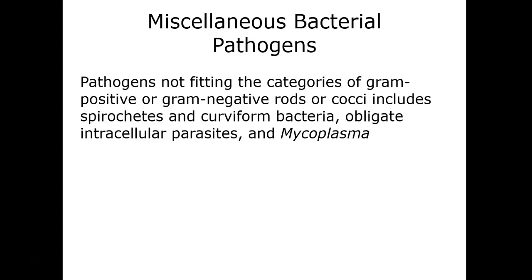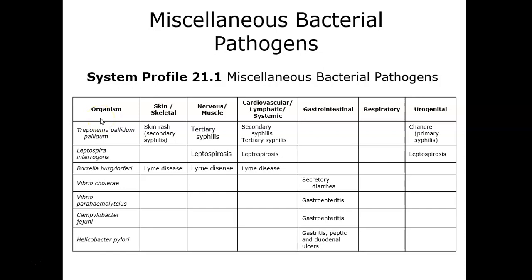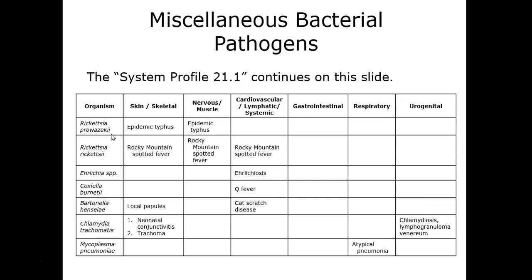This includes not only the spirochetes and the curved bacteria, but also the obligate intracellular parasites and the bacteria that lack their cell walls like the mycoplasma. Table 21.1 in your book walks through, as in previous disease chapters, the disease and the body profile in terms of what disease and what system is impacted.